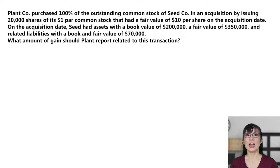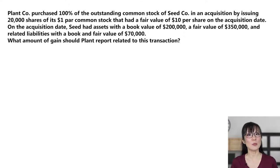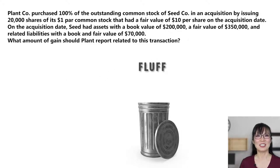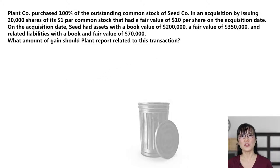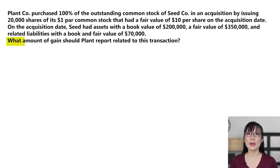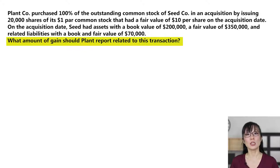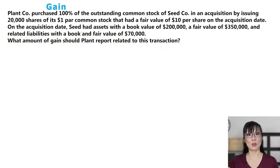First, read the question. Then, as you read through the prompt, you can keep what you need and throw out what you don't. The question reads: what amount of gain should Plant report related to this transaction? So we're looking for a gain. Make a note on the top of your board.